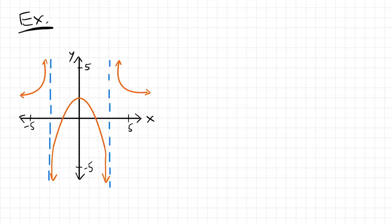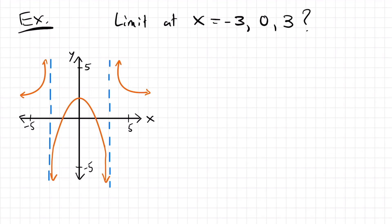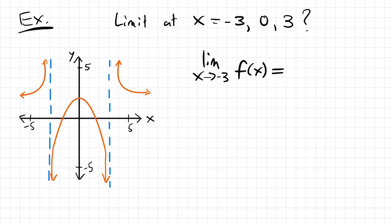Now we're going to look at this graph, where we'll be interested in the limit at x equals negative 3, 0, and 3. Starting with the limit as x approaches negative 3, negative 3 is actually the location of a vertical asymptote. Starting from the right side and following the function, as we get closer to x equals negative 3, we hit that vertical asymptote and the y values are getting smaller and smaller — we are going further down the negative part of the y-axis, reaching negative infinity from the right side.